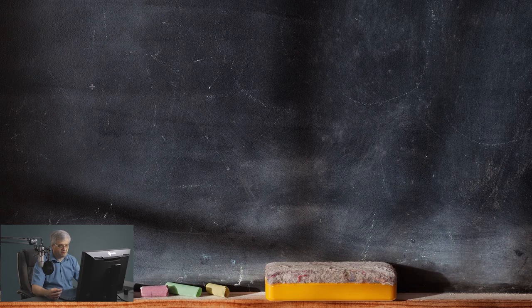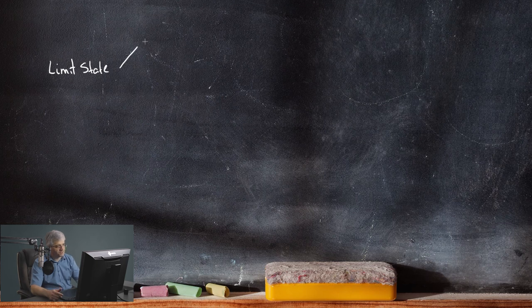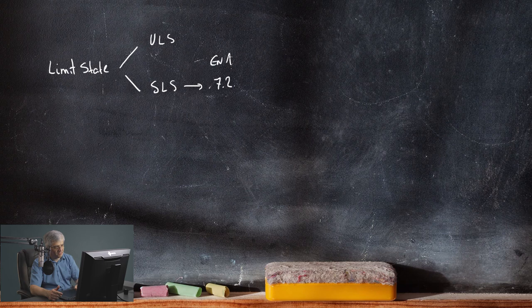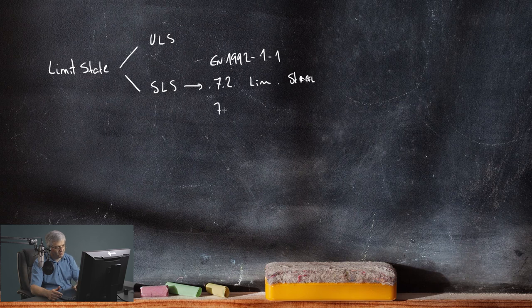So first let me explain what we are doing. We have the limit state calculation. In the limit state calculation we have the ultimate limit state - this is not a topic of this video. And then we have the serviceability limit state. For concrete structures, the serviceability limit state is defined in chapter 7.2 in Eurocode EN 1992-1-1. In 7.2 we have limitation of the stresses, and in chapter 7.3 we have the limitation of the crack width.